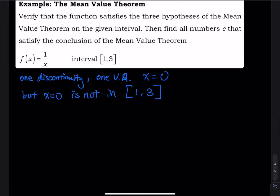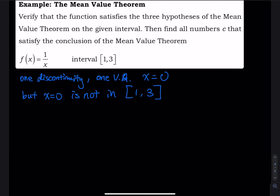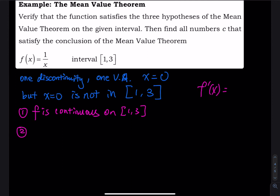Checking hypothesis one: continuity. For any value between x = 1 and x = 3, the function is defined, so f is continuous on [1, 3]. Checking hypothesis two: differentiability. Taking the derivative, f'(x) = −1/x². This derivative exists for all x in (1, 3), so f is differentiable on (1, 3).